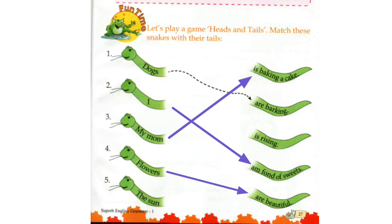Number five: The sun. The sun is a singular noun, so the helping verb will be Is. The sun is rising.